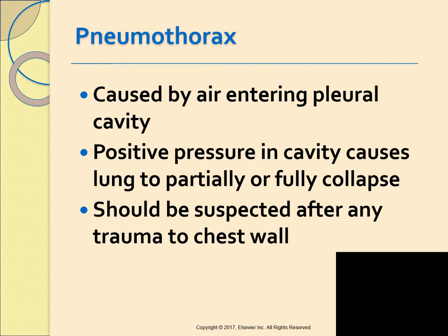The term pneumothorax is when air enters your pleural cavity. Normally there's a negative pressure between your visceral pleura and the parietal pleura, called the pleural space. This space contains a few milliliters of lubricating fluid that reduces friction when you move or breathe. If air enters this space there's a change to positive pressure and the lung will collapse. As the volume of air in the pleural space increases, there's no ability for the lung to have any volume.